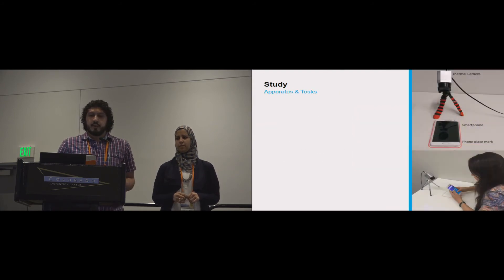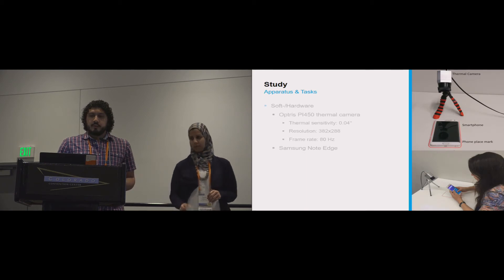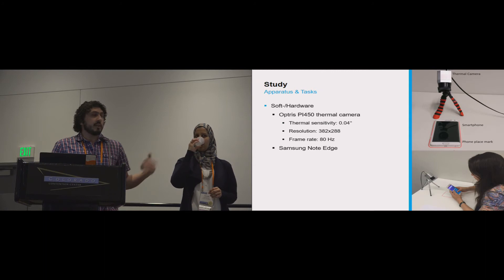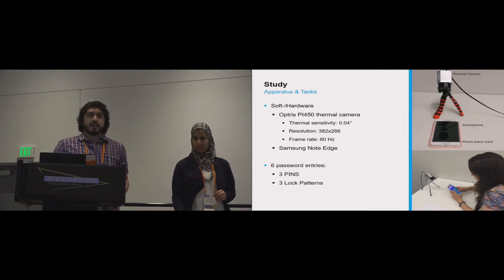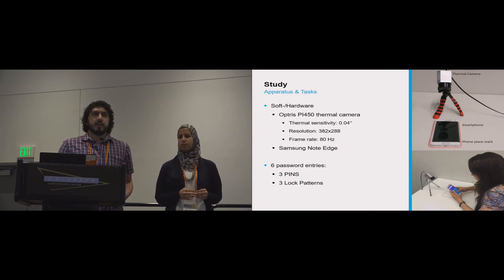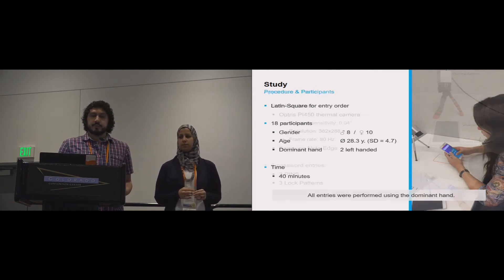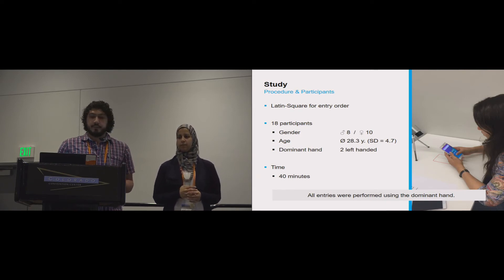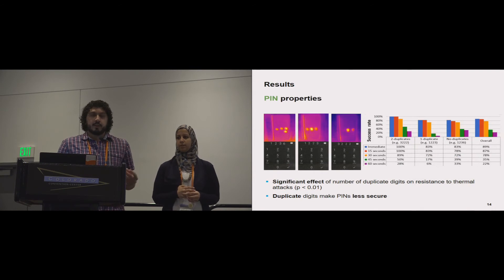We used the Optris thermal camera. You can see the apparatus here. Each participant had to enter three PINs and three patterns. The order of entry was counterbalanced using Latin square. We had 18 participants, 10 females, and they all entered the passwords using their dominant hand.